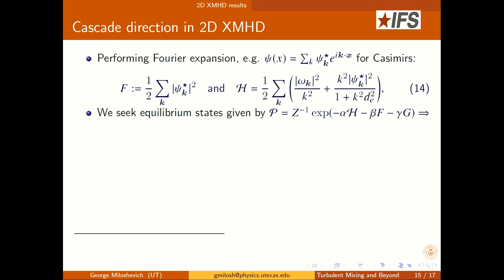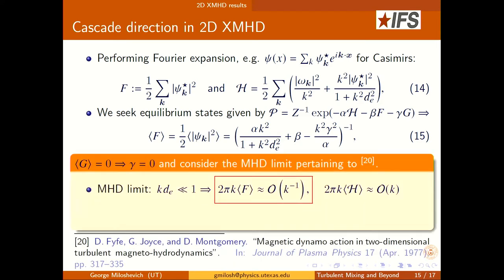We seek equilibrium states given by this Gibbs distribution. The equilibrium for F is a simpler expression than in the 3D case. To understand how it behaves as k changes, a common assumption in this business is to set cross-helicity to zero, which makes the parameter gamma equal zero. Then we consider the MHD limit, which has been handled by Fyfe and other authors and confirmed in numerical simulations.